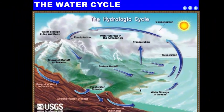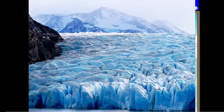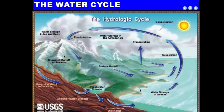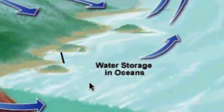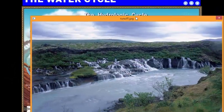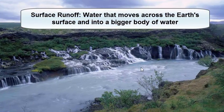When water falls back down to Earth, a couple things can happen. In cold mountain or arctic regions, snow can stay on the ground and be stored in bodies of ice called glaciers. However, in warmer areas or when seasons change, snow melts and creates liquid water. This leads to surface runoff, where water moves across the surface of the Earth back into a body of water — feeding into streams, then rivers, then larger bodies like lakes or oceans.